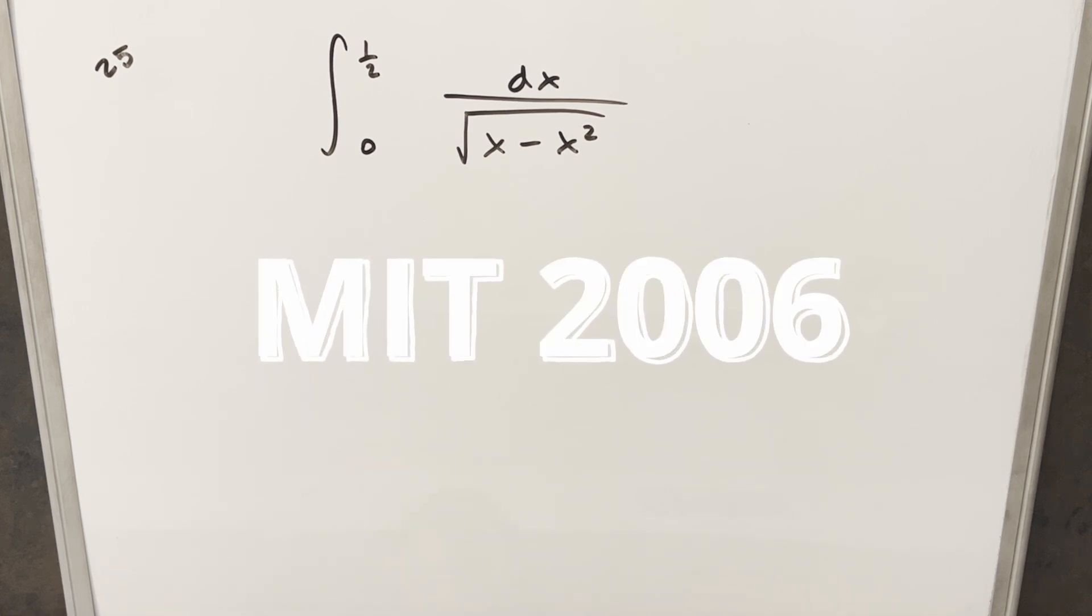Okay, we have written another integral from the MIT integration B2006, number 25. We have the integral from 0 to 1 half, 1 over square root x minus x squared, dx.